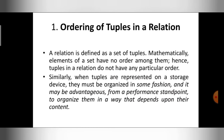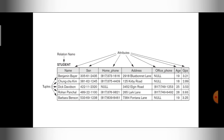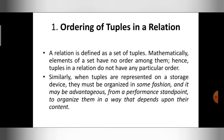The first characteristic is ordering of tuples in a relation. A relation is defined as a set of tuples. You can see here my student relation contains a set of five tuples. Mathematically, there is no order among the tuples in the relation.